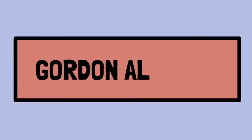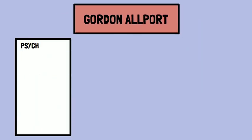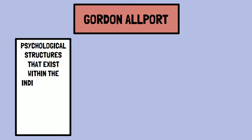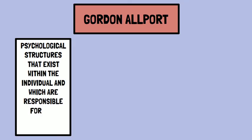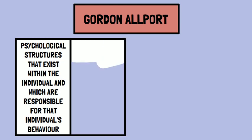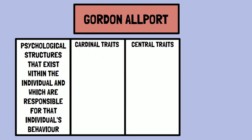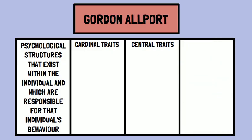One of the leading figures of the trait approach was Gordon Allport, who proposed the trait theory of personality. According to Allport, traits are psychological structures that exist within the individual and are responsible for that individual's behavior. He categorized traits into three types: cardinal traits, central traits, and secondary traits.